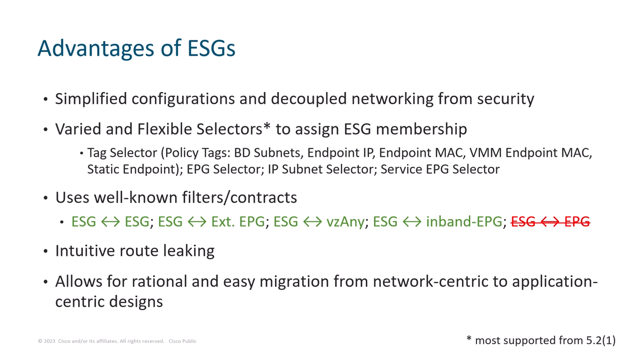Both of these options are available in ACI starting from version 5.2.1. There is also a service EPG selector used to map service EPG to ESG. This is related to the topic of service graphs, and as the last selector it was introduced in version 5.2.4.